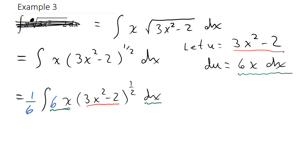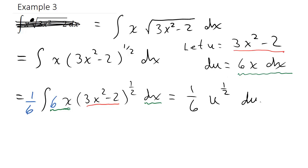Now I'm ready to substitute. I have 1/6 out front. I replace (3x squared minus 2) with u to the 1/2, and the 6x dx becomes du. Applying the power rule: add 1 to get 1/2 plus 1 equals 3/2, so u to the 3/2, then multiply by the reciprocal 2/3, plus c.